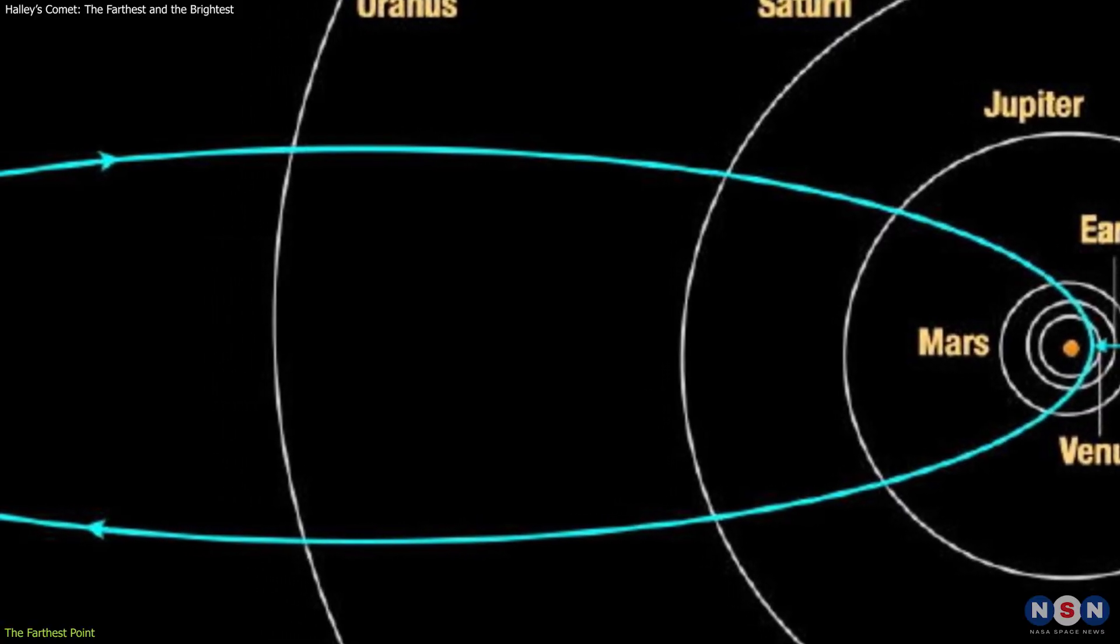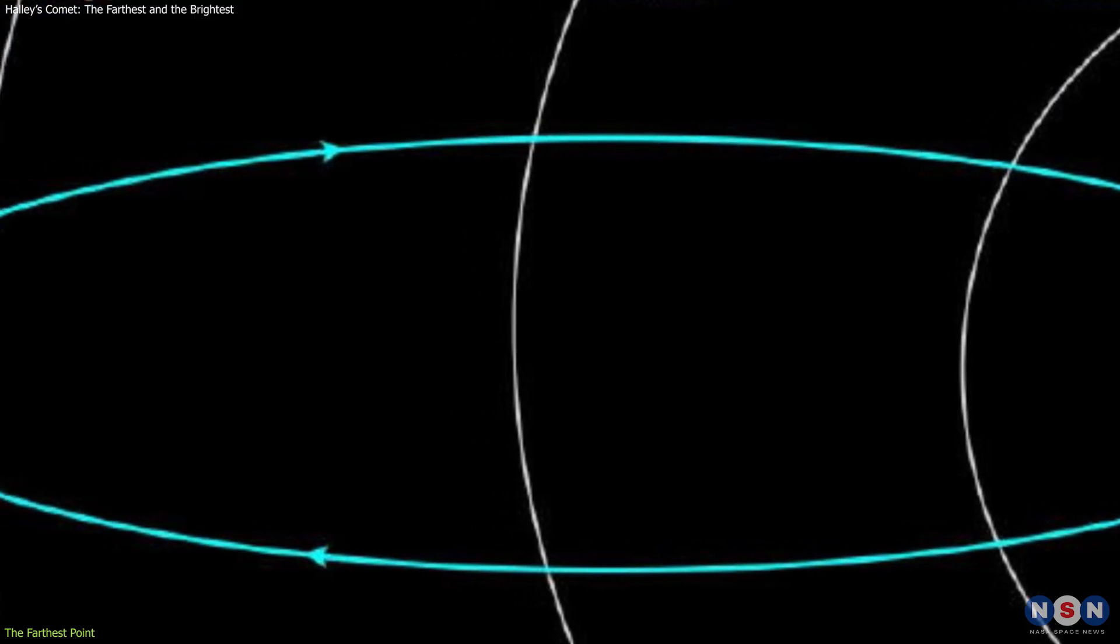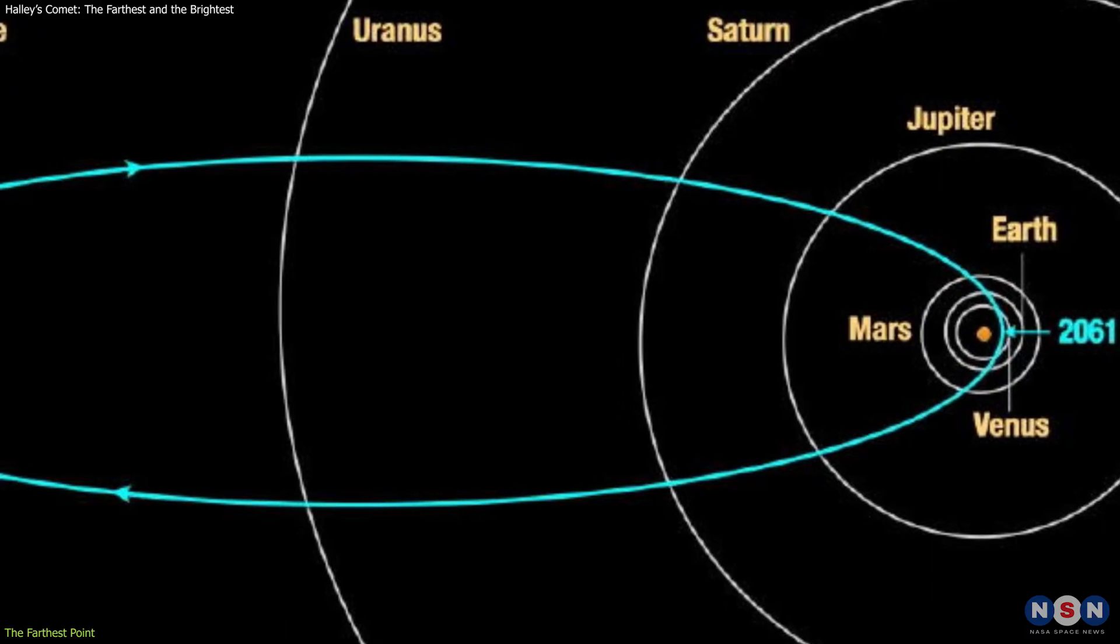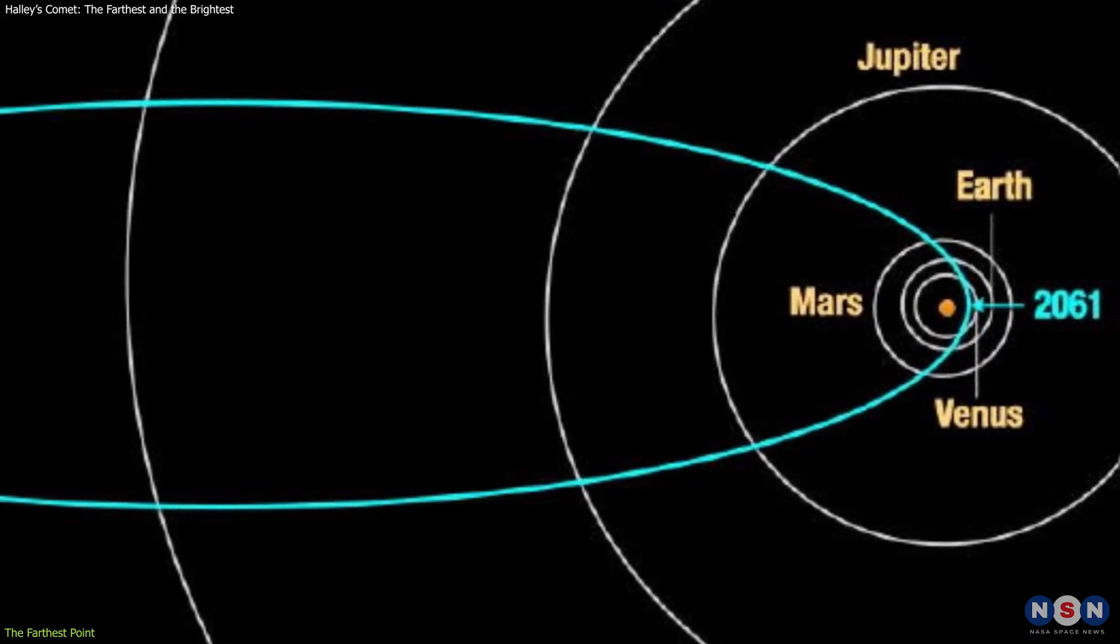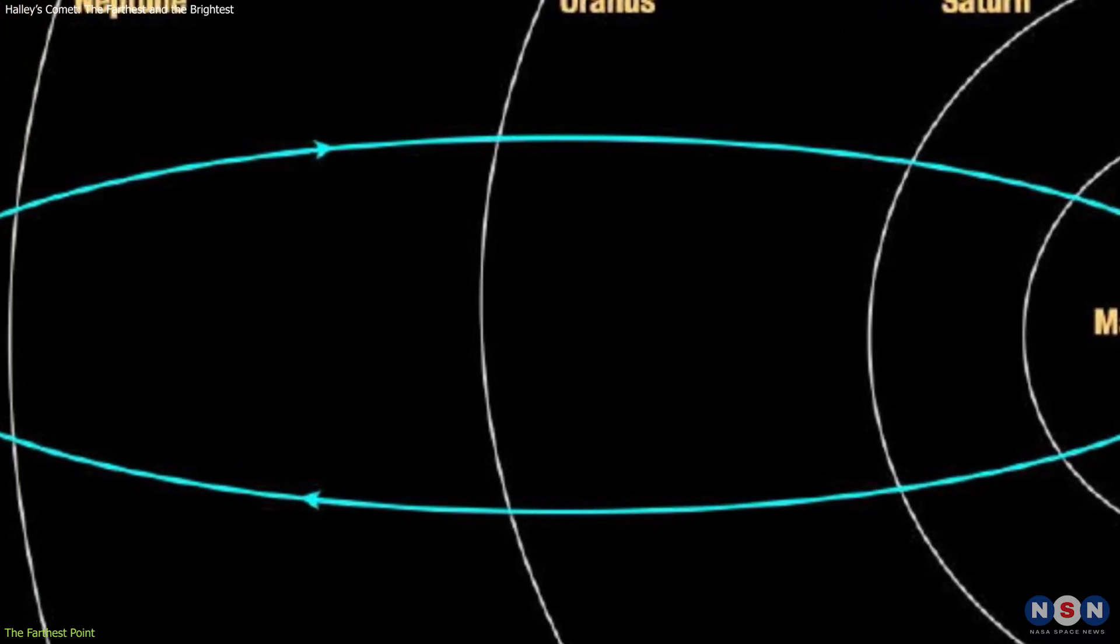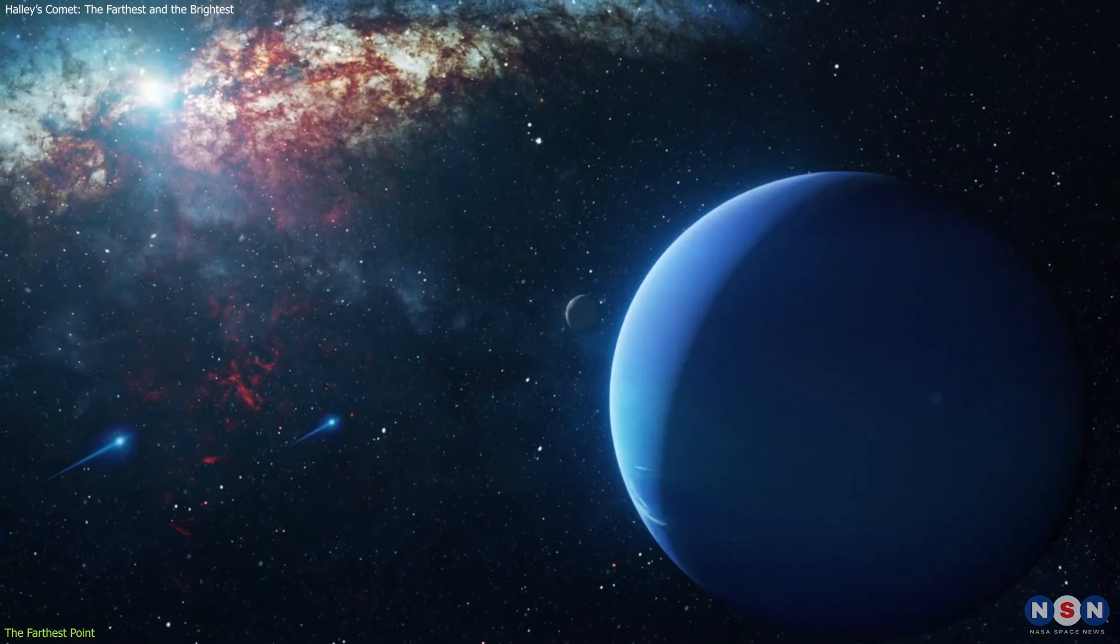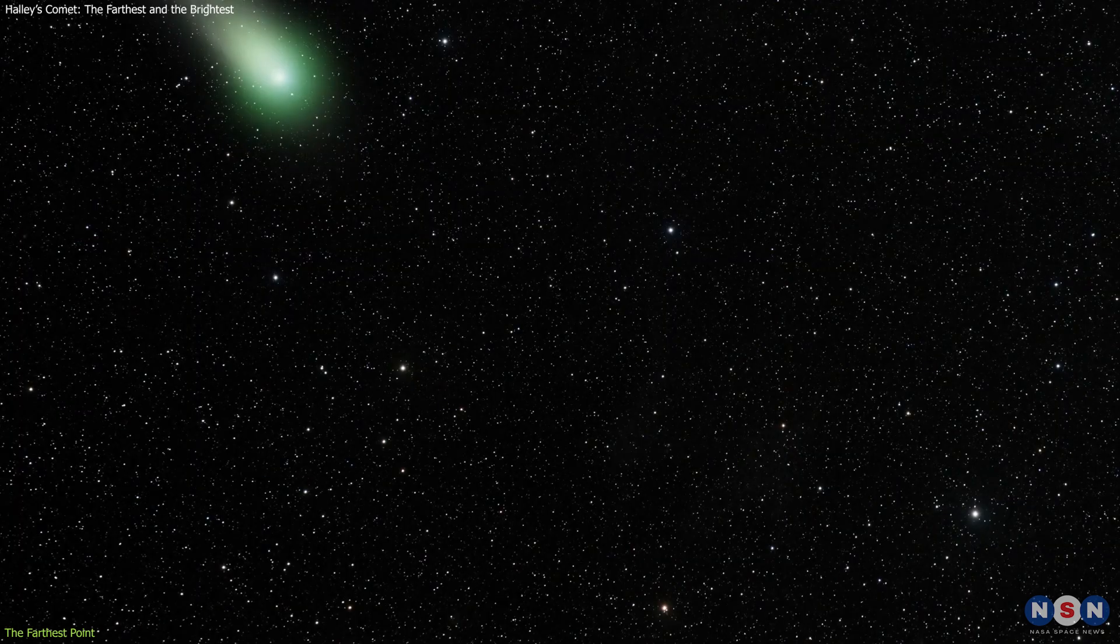For Halley's Comet, the eccentricity is 0.967, which is very high, meaning its orbit is very stretched. This means that the comet's perihelion is about 88 million kilometers from the sun, which is closer than the orbit of Venus, while its aphelion is about 5.2 billion kilometers from the sun, which is beyond the orbit of Neptune. That's a huge difference. But why does this matter?